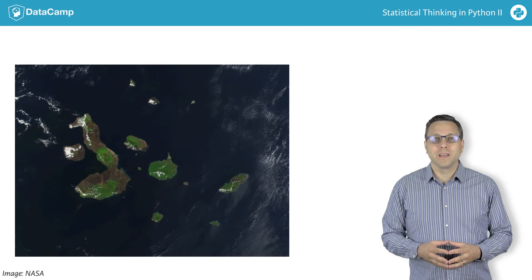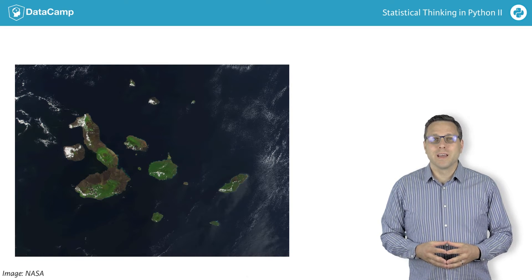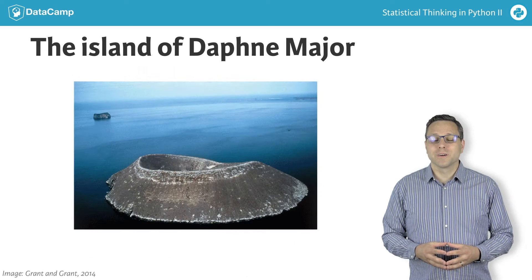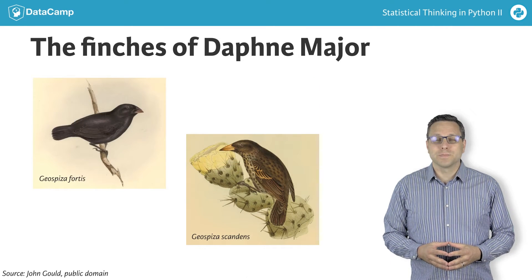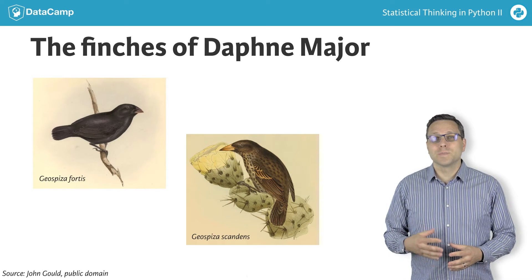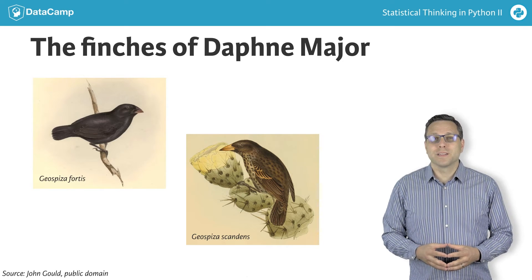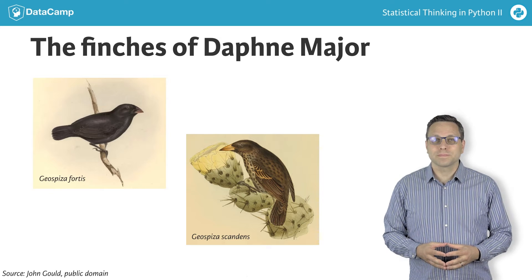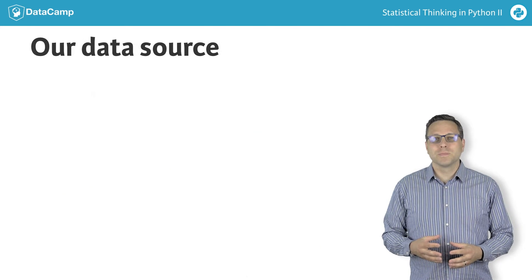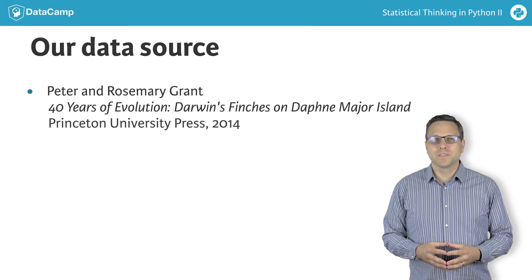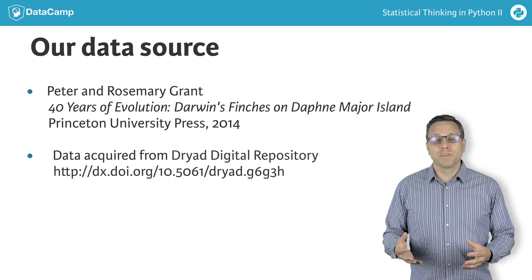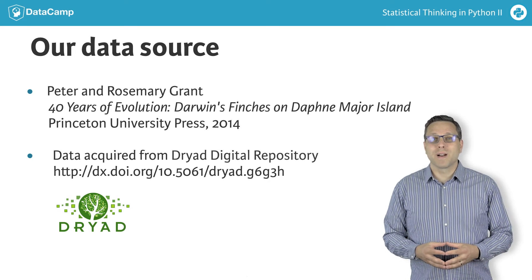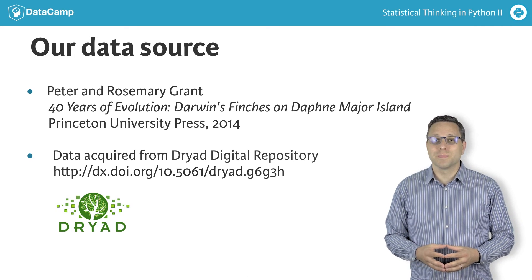Every year since 1973, Peter and Rosemary Grant of Princeton University have been spending several months of the year on the tiny volcanic cinder cone island of Daphne Major in the Galapagos. This island has two dominant ground finch species, Geospiza fortis and Geospiza scandens. The Grants have monitored them every year, tagging them, making physiological measurements, taking samples for genetic sequencing, and more. In 2014, they published a book entitled Forty Years of Evolution, Darwin's Finches on Daphne Major Island. They generously placed all of their data on the Dryad data repository, making it free for anyone to use. The dataset is impressive, and a great set for using data science and statistical inference to learn about evolution.